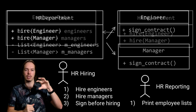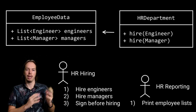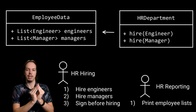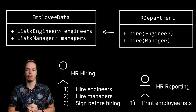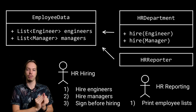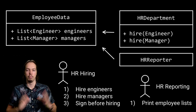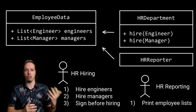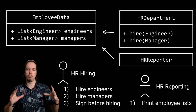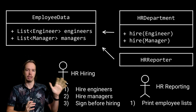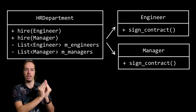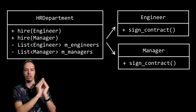A better design would probably be to take out the data — the list of engineers and managers — and have the logic of the hiring be contained in the HR department class. We could then add a second class that contains all the logic related to creating reports. But to keep this example as simple as possible, we'll just forget about that for now and go back to our original design.